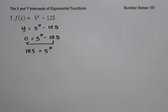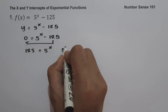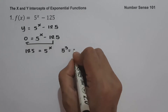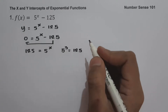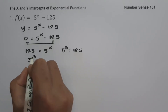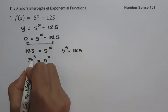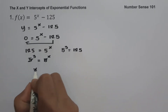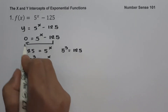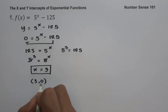To find the value of x, we must have the same base. So let us change 125 as 5 raised to 3, because 5 multiplied 3 times to itself gives us 125. So we have 5 raised to 3 equals 5 raised to x. Since we have the same base, we cancel the base and get x equals 3. Since x is 3 and y is 0, our x-intercept is (3, 0).